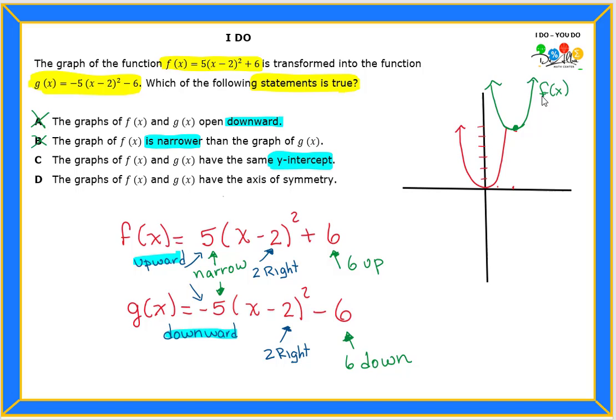Now what about g(x)? We have it down here. That one goes 2 to the right, so it's 2 to the right, but 6 down. So that would be 1, 2, 3, 4, 5, and 6 down. So it's going to be somewhere over here. But what do I know about the second one? This one is not going to go upward, it's going to go downward, something like this.